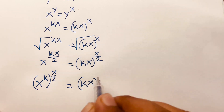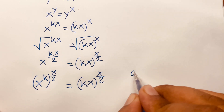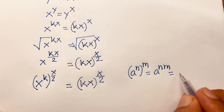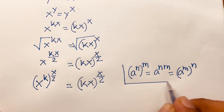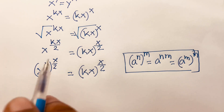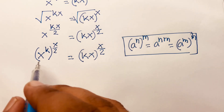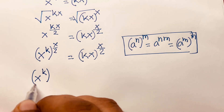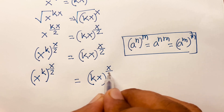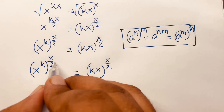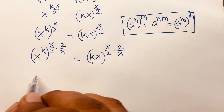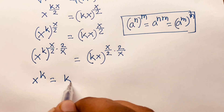I follow the rule: a to the power n, bracket to the power m, equals a to the power nm. Applying this, the exponent becomes k times x over 2, giving kx over 2. So I have x to the power k, bracket to the power x over 2, equals kx bracket to the power x over 2. Then I multiply both exponents by 2 over x, which gives x to the power k is equal to kx.